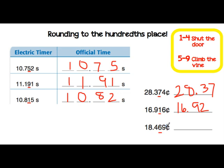Last problem: we have a 9 to the right of the hundredths place, which fits in the rule to climb the vine. So we have $18.47 because we're increasing the underlined number by 1.